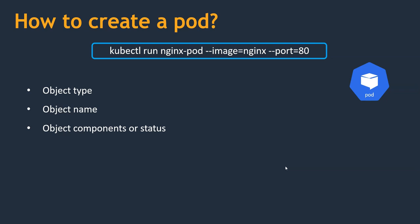If we want to create a manifest file, we need one more thing: the API version to use when creating an object. With that information it is quite easy to create a pod. You may ask where to find this information — that is where we refer to the Kubernetes documentation. Let's jump into the documentation.